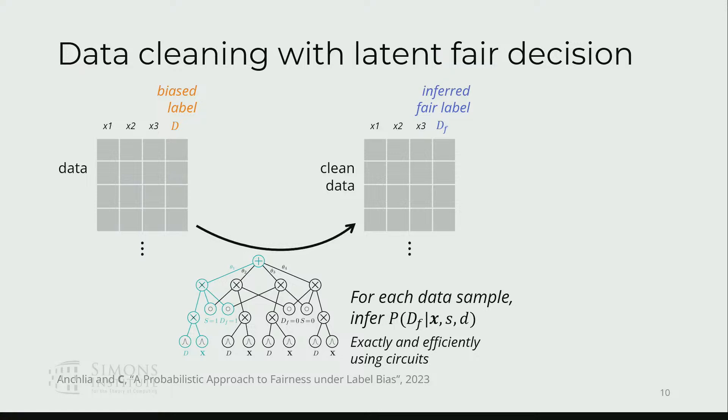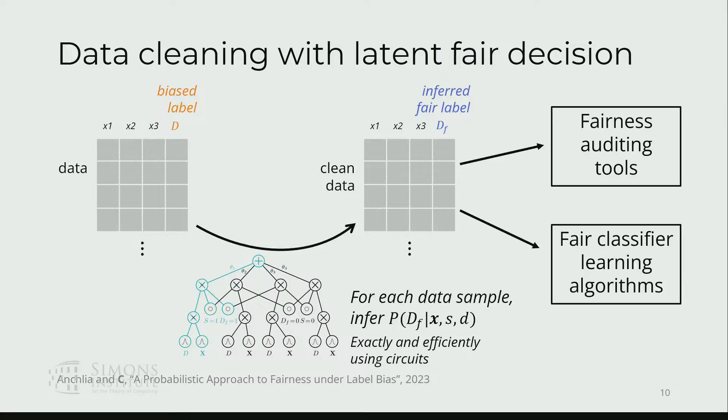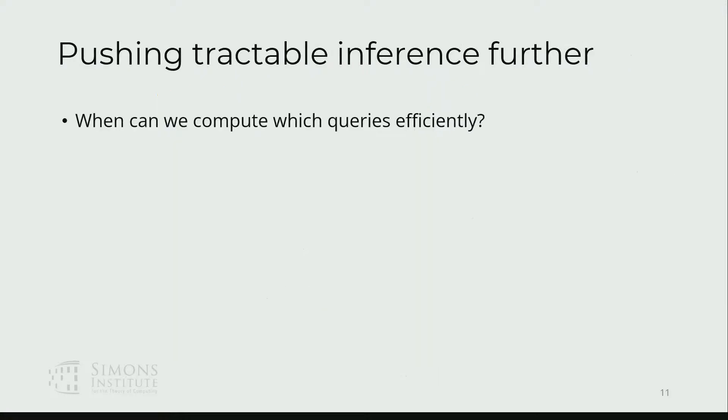How this can be used is essentially, because we can infer these conditional probabilities very efficiently, we can clean the data efficiently and then fit it into some downstream tasks too. For instance, given some arbitrary classifier, probabilistically reason about how fair that classifier is with respect to this hidden fair label, and also enforce other notions of fairness on that hidden label.